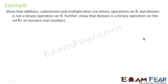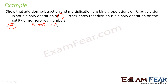We will take some examples. We have to prove that addition, subtraction, and multiplication are binary operations on R, but division is not a binary operation on R. If you take any two real numbers and add them, R plus R will always equal a real number.